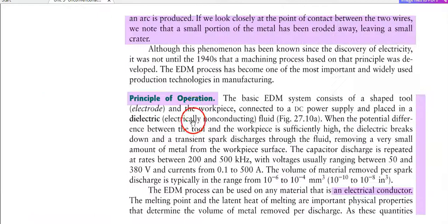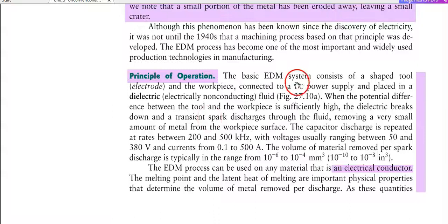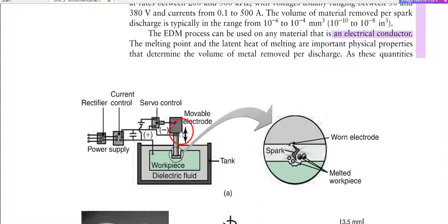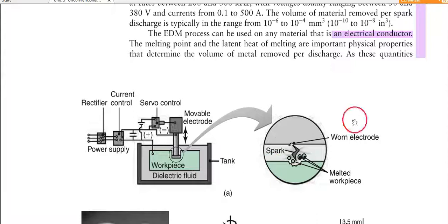What is the principle of operation of EDM? The basic system consists of a shaped tool electrode and workpiece, connected to a DC power supply and placed in a dielectric fluid. The tool is driven by a servo motor with a current controller and rectifier. When the tool comes close to the workpiece, an arc is generated that removes material from the metal. The dielectric fluid surrounds the process, and the molten workpiece material is carried away.